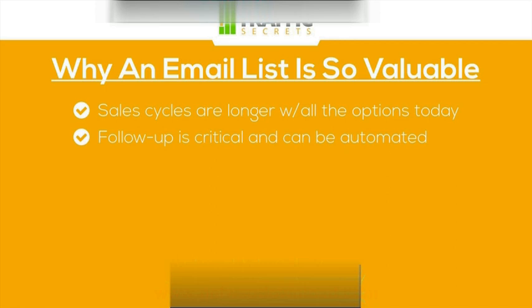One, you don't have to manually figure out who's been on the list for a week or who just joined. All prospects are treated equally in their experience going through your list process. If follow-up email number one goes out the day after they opt in, everybody that ever joins the list gets that email the day after they join.